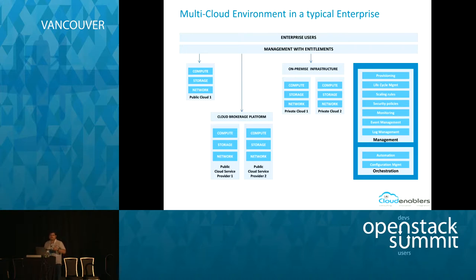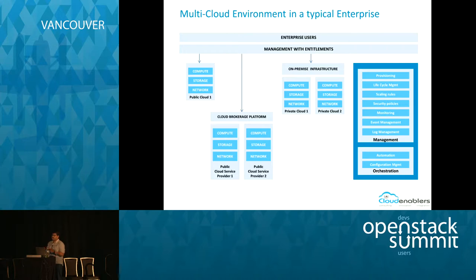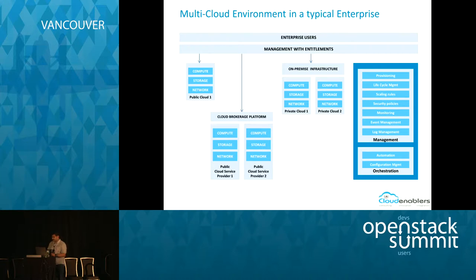You also need orchestration — auto scaling, scheduled backups, configuration management like pushing applications into provisioned VMs or patching the latest version into existing infrastructure. That's a typical multi-cloud environment. Horizon by default sits in one OpenStack setup and lets you connect only to the infrastructure in that one cloud. So the question is: how do you enable Horizon to manage all of these different infrastructure environments?